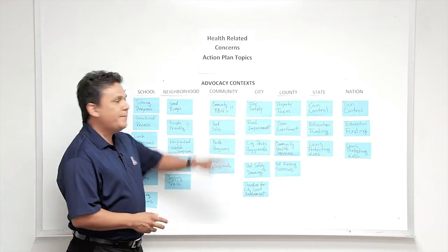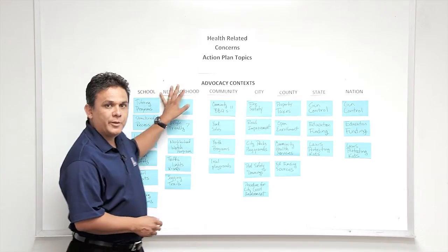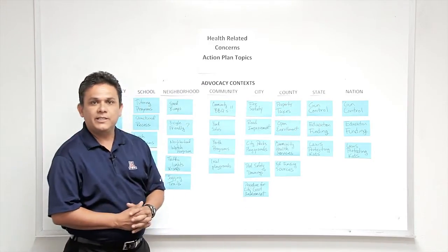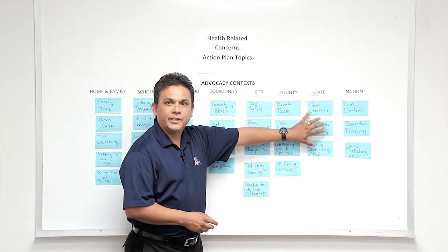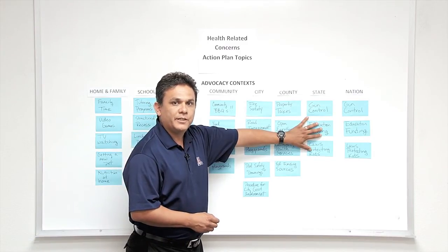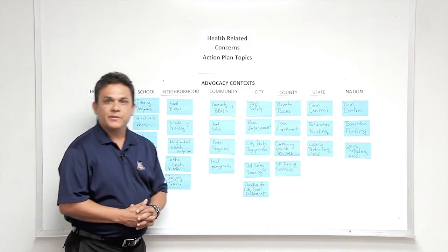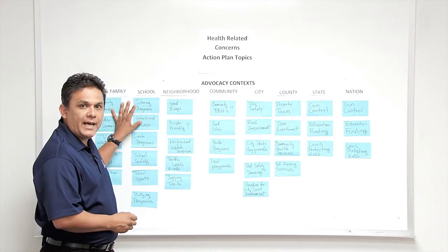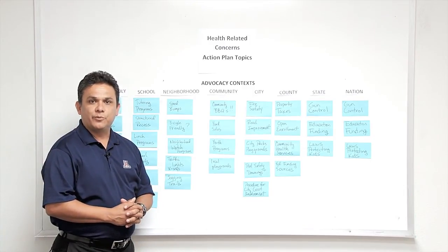This example has a topic of discussion, a specific title, and predetermined headers ranging from home and family to concerns at the national level. Once the ideas were gathered, they were grouped according to the predetermined headers. On this side of the affinity diagram, the state and federal headers include gun control, funding for education, and laws that protect children.